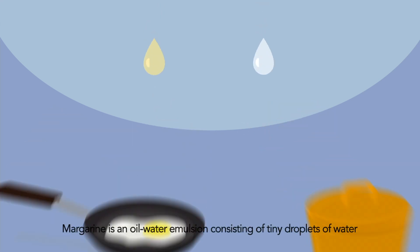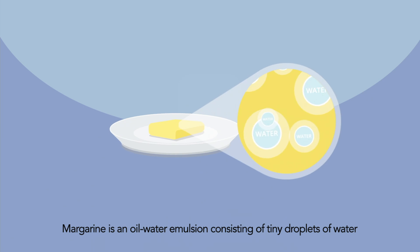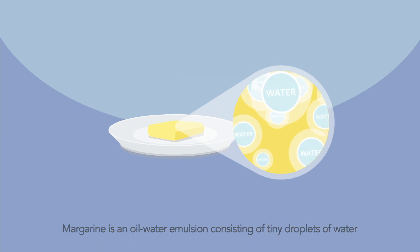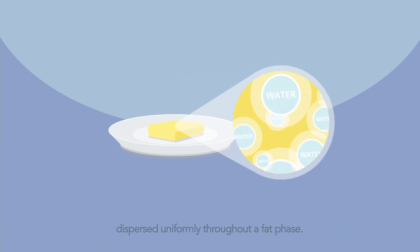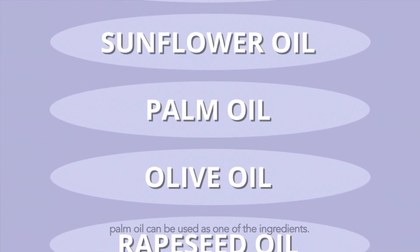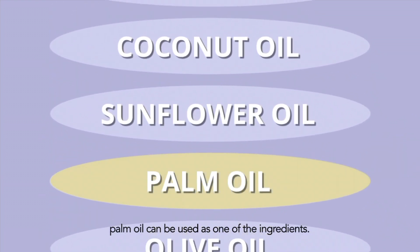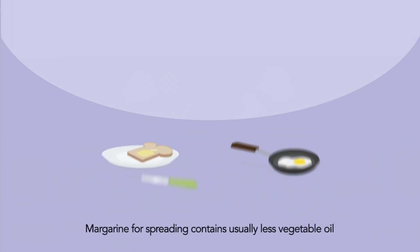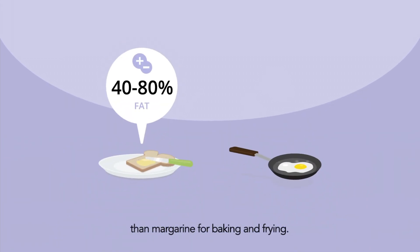Margarine is an oil-water emulsion consisting of tiny droplets of water dispersed uniformly through a fat phase. Together with other vegetable oils, palm oil can be used as one of the ingredients. Margarine for spreading contains usually less vegetable oil than margarine for baking and frying.